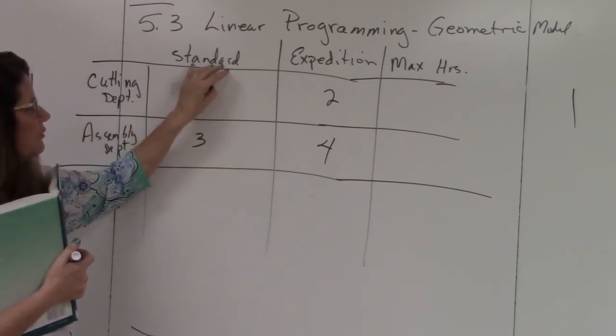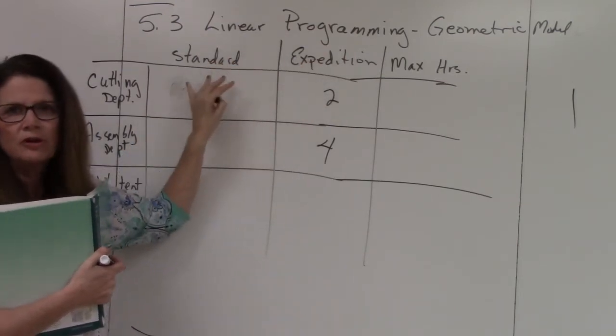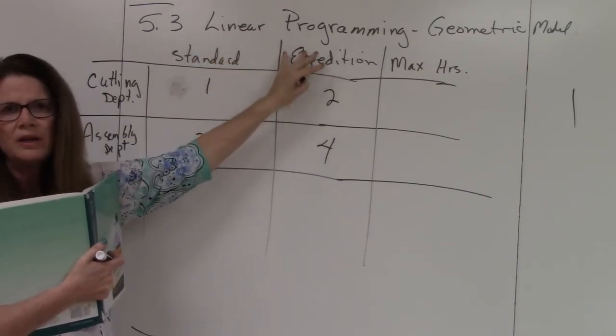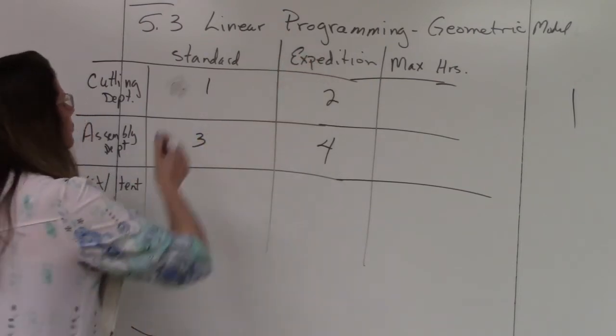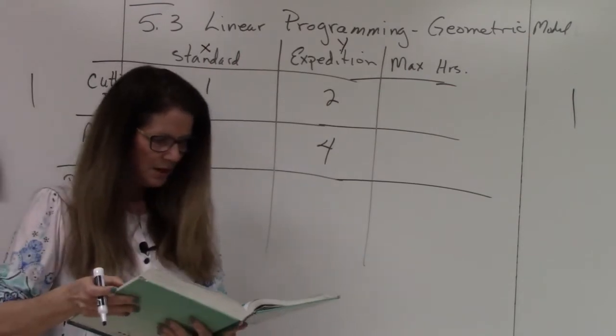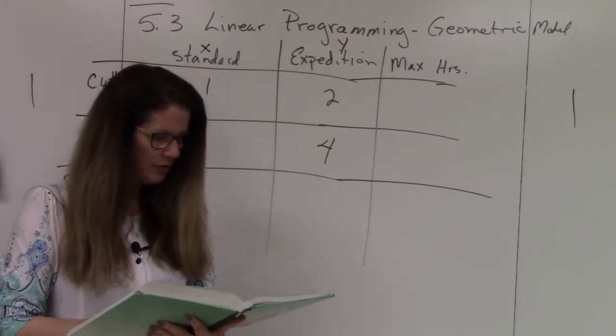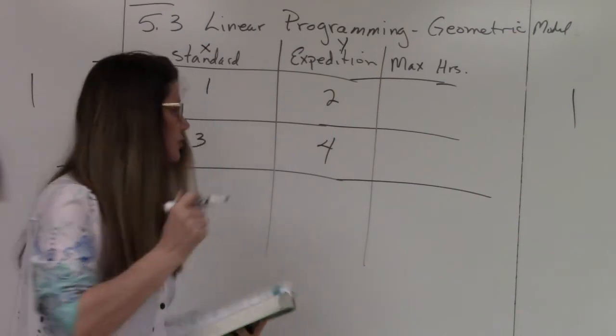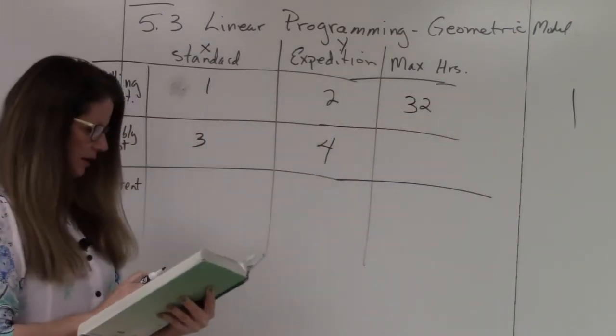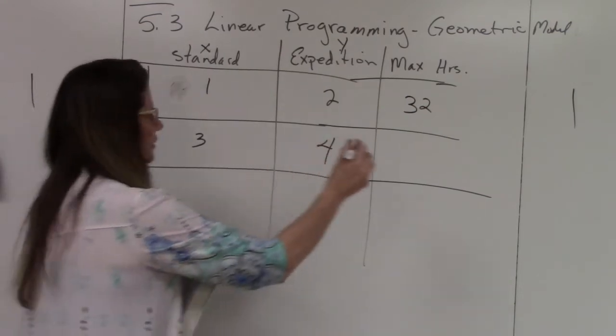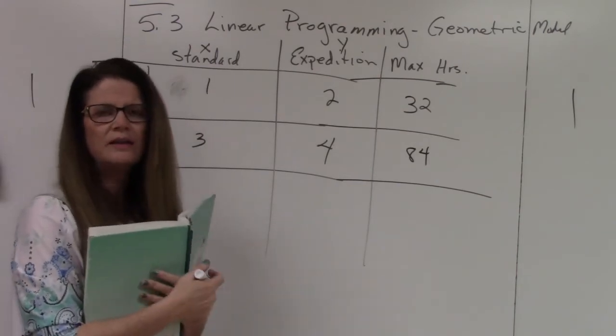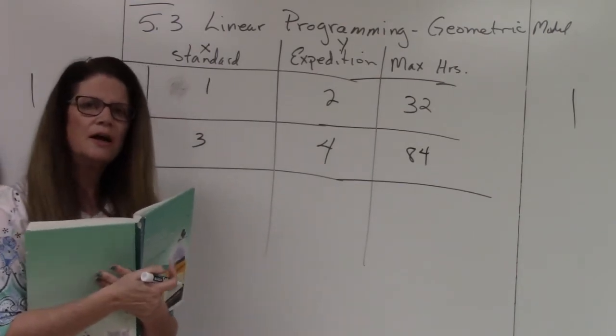Each standard tent requires one hour of labor for cutting and three hours for assembly. The expedition tent requires two hours for cutting and four hours to assemble. The maximum labor hours available per day in the cutting department is 32, and in the assembly department it is 84.